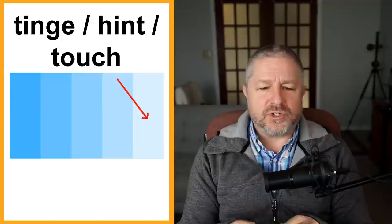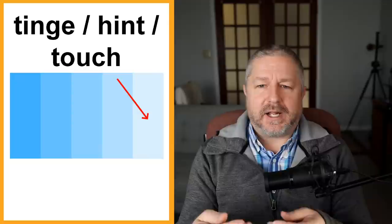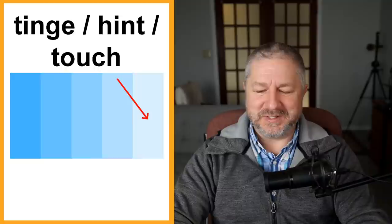We also have words like tinge, hint, or touch. Someone might paint the wall white but it might have a tinge of blue in it — a hint of blue, a touch of blue. Someone might buy a white T-shirt and after washing it with a brand new pair of blue jeans, it might end up having a tinge of blue because the dye from the jeans went into the T-shirt. A tinge, hint, or touch is when you talk about the color white but can see a little bit of another color in it. By the way, I'm going to talk about black and white as colors for this English lesson.